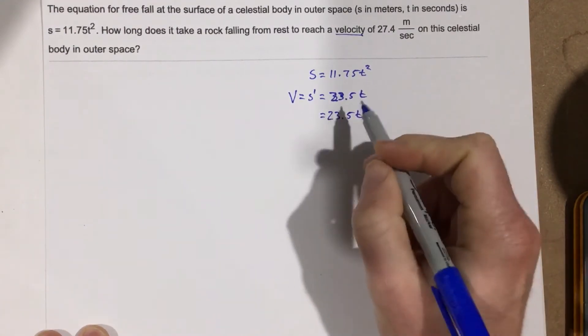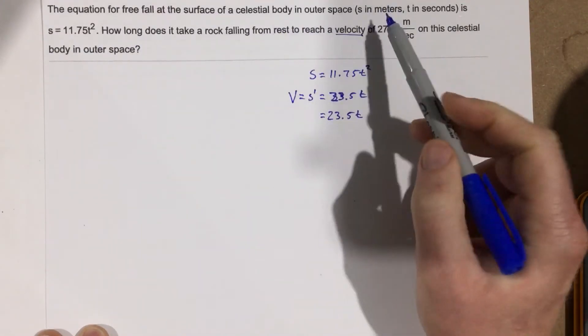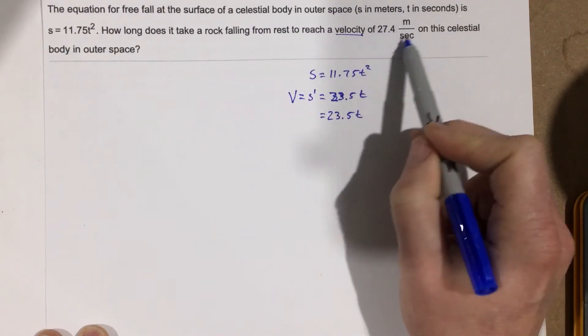So now that we have 23.5 t for our velocity, they want us to see how long does it take for this rock to reach that velocity.